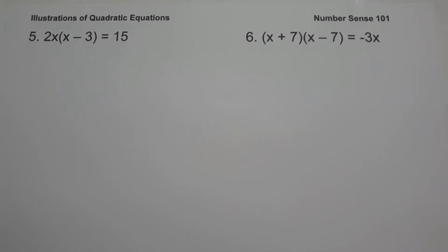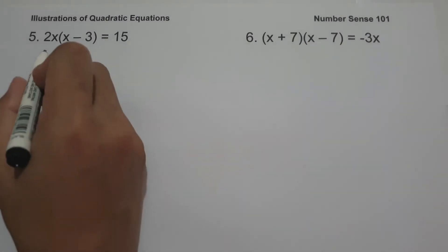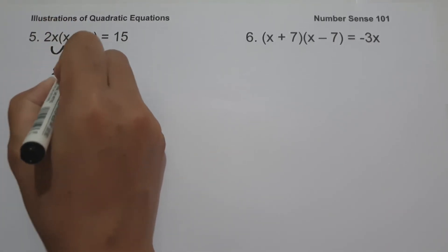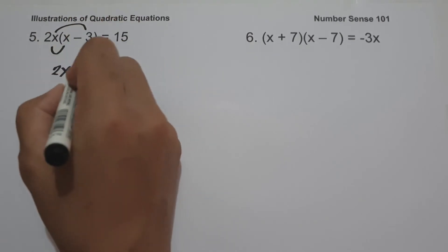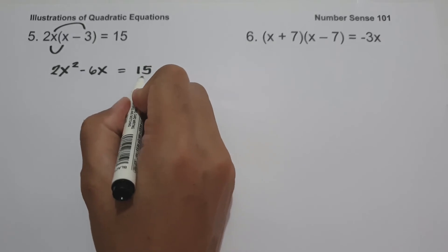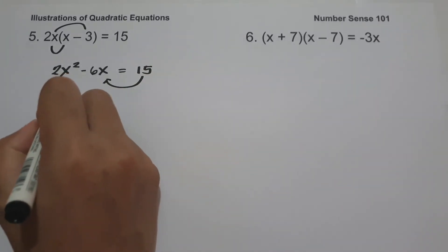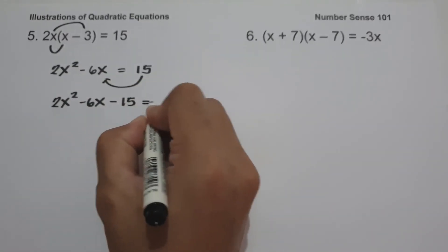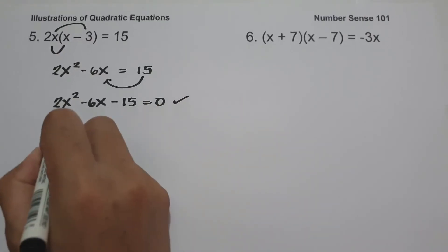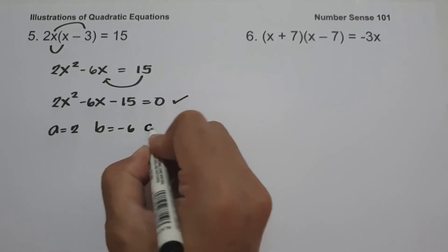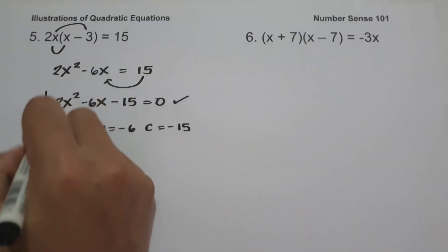On example number five, we have 2x times (x minus 3) equals 15. Simplifying: 2x times x is 2x squared and 2x times negative 3 is negative 6x equals 15. Moving 15 to the other side: 2x squared minus 6x minus 15 equals zero. So a is 2, b is negative 6, and c is negative 15.